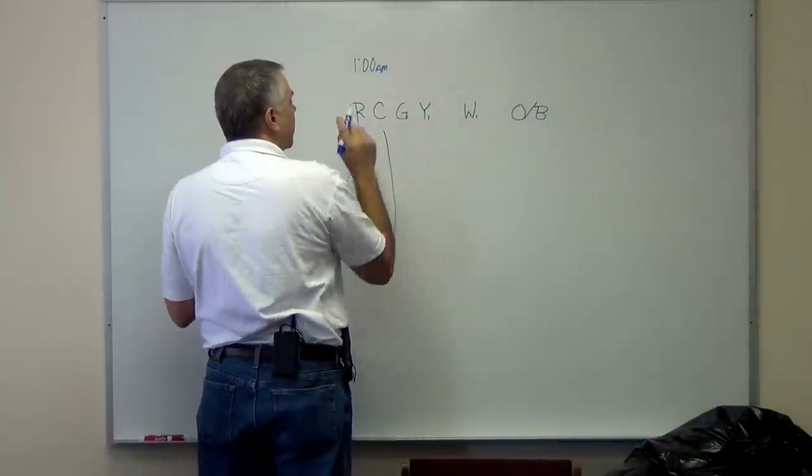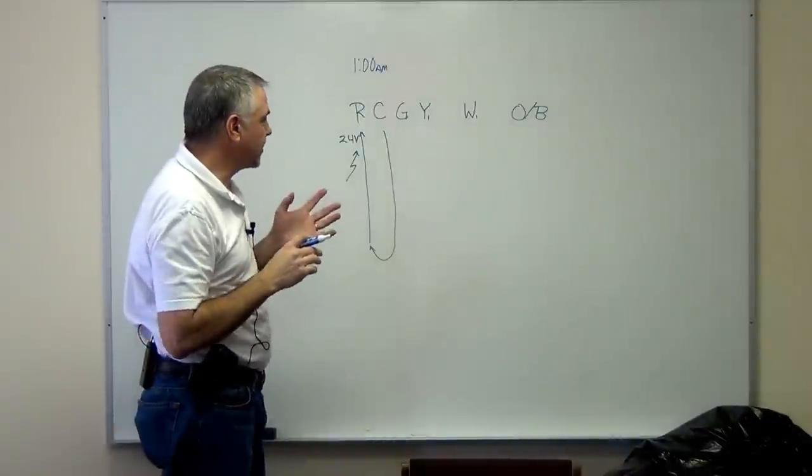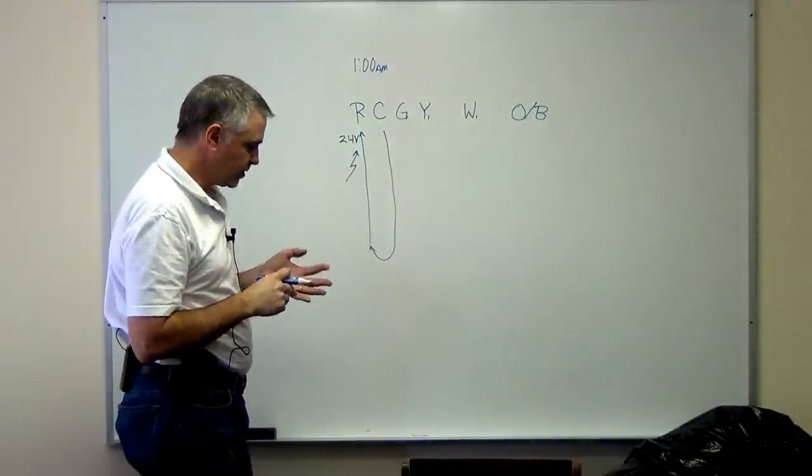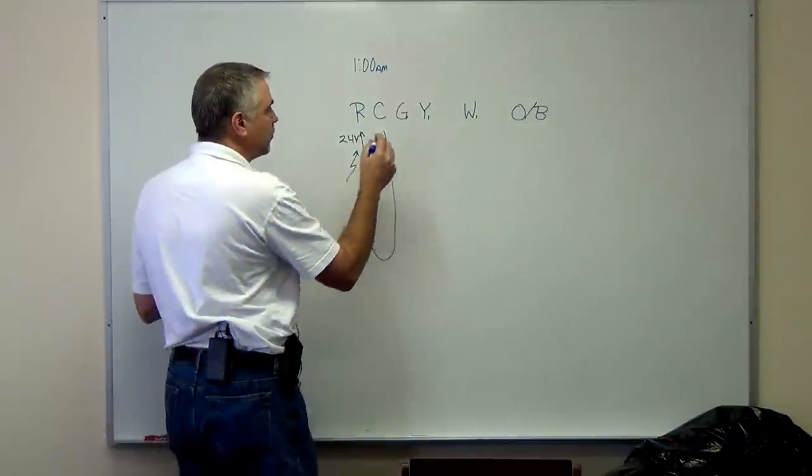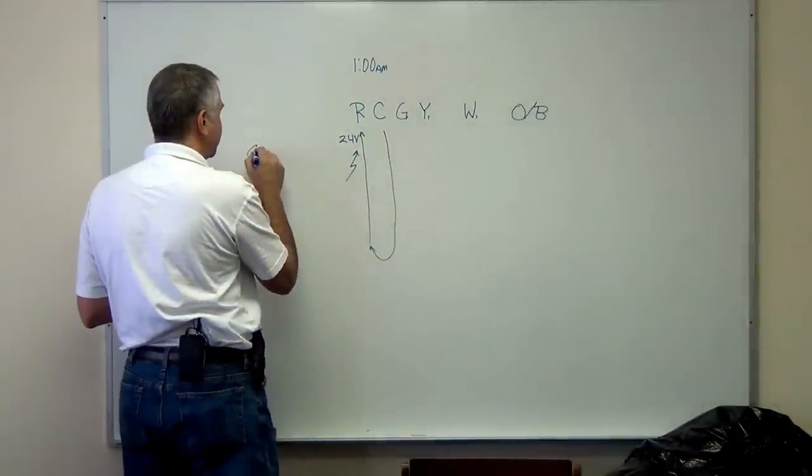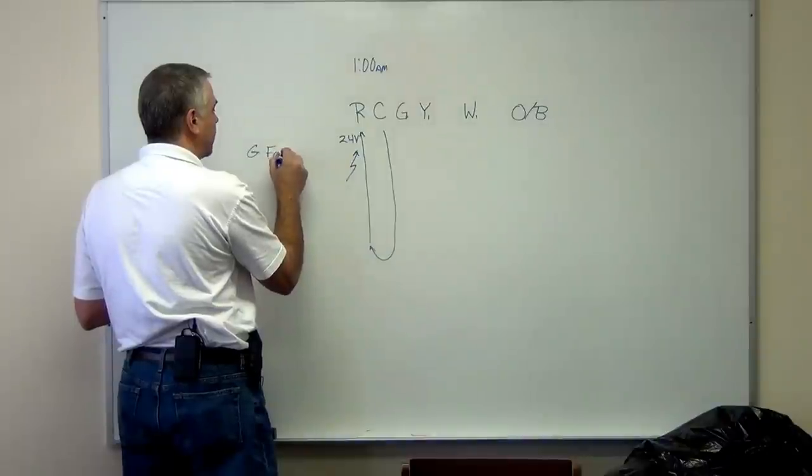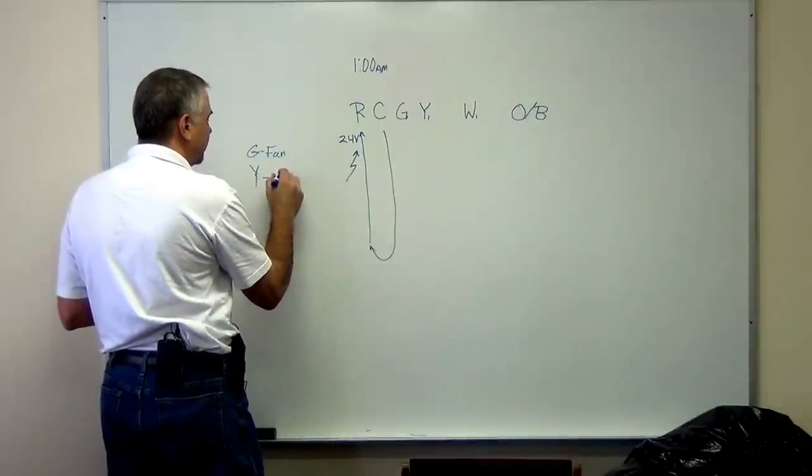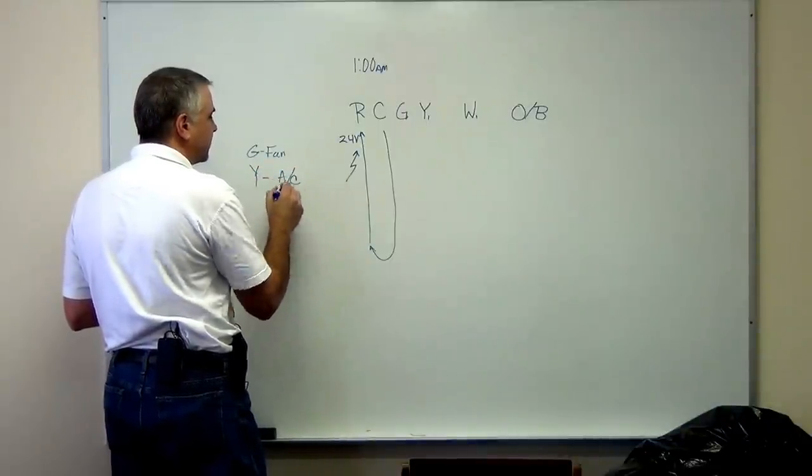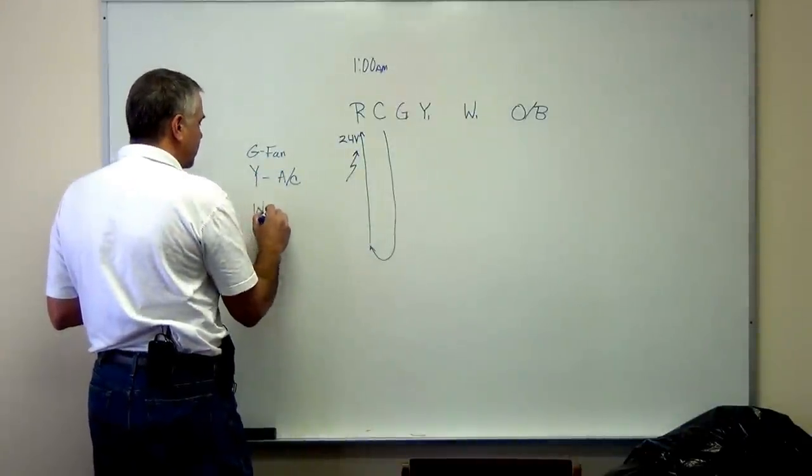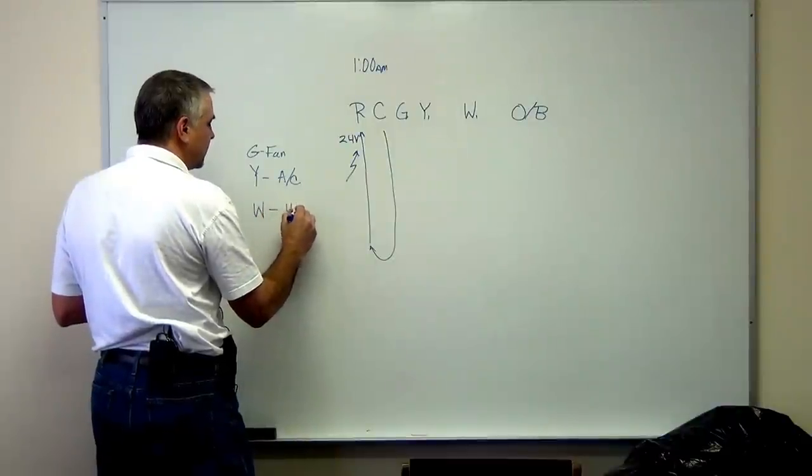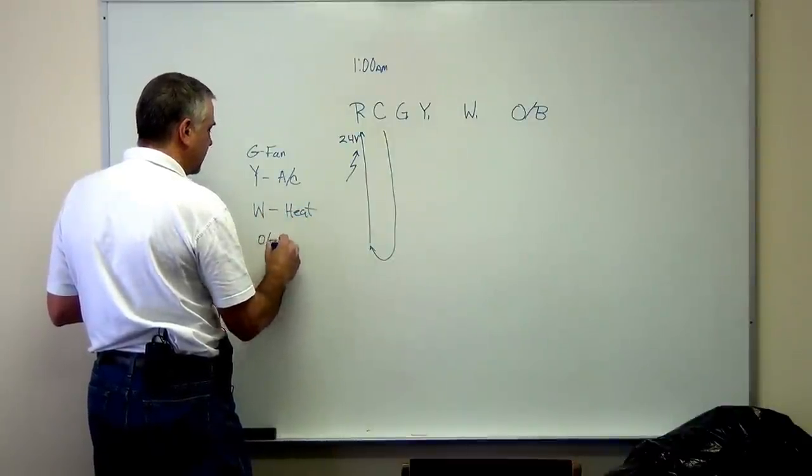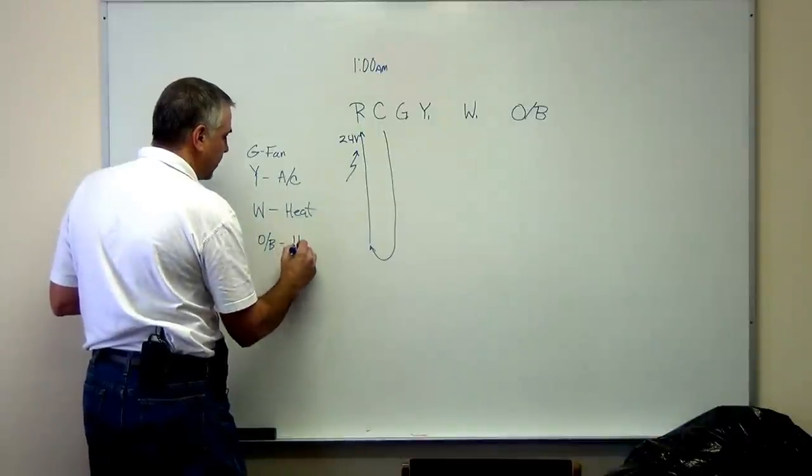Now, if the thermostat is set up in AC mode and we want to run cooling, there's a couple things. The green wire, or G, is your fan, your blower. The yellow wire is your AC unit. We'll get into the other ones. The W is your heat, and the OB is if you have a heat pump.